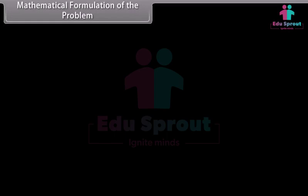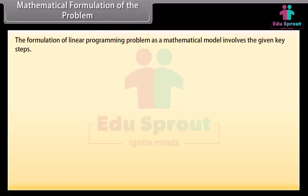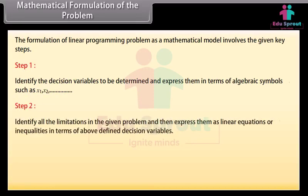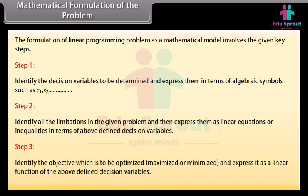Mathematical Formulation of the Problem. The formulation of a linear programming problem as a mathematical model involves the following key steps. Step 1: Identify the decision variables to be determined and express them in terms of algebraic symbols such as x1, x2 and so on. Step 2: Identify all the limitations in the given problem and express them as linear equations or inequalities in terms of the above-defined decision variables. Step 3: Identify the objective which is to be optimized, maximized or minimized, and express it as a linear function of the above-defined decision variables.